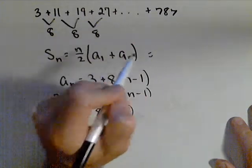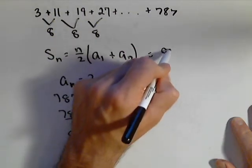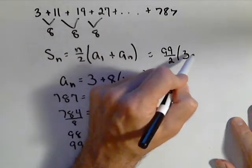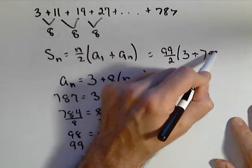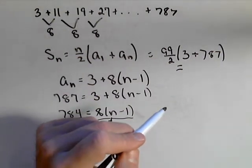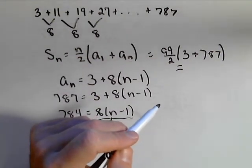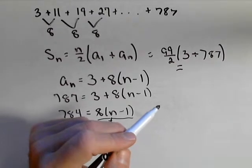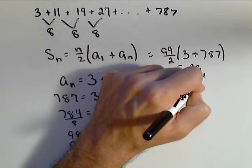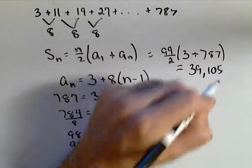So we can go back up and apply our formula. So we have 99 over two times our first term, which is three, plus our last term, which is 787. And we can now calculate our sum. And we can just do it all at once. And we get 39,105.